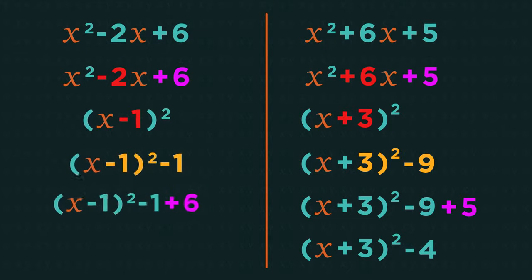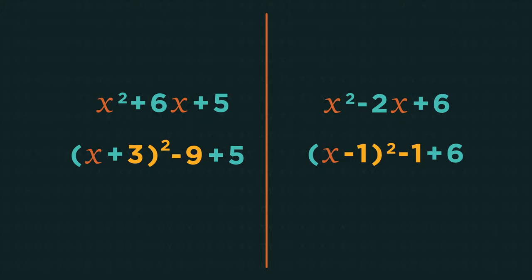Did you get it right? x minus one squared plus five. So that is how we complete the square. But why do we subtract the square of the bracket number?